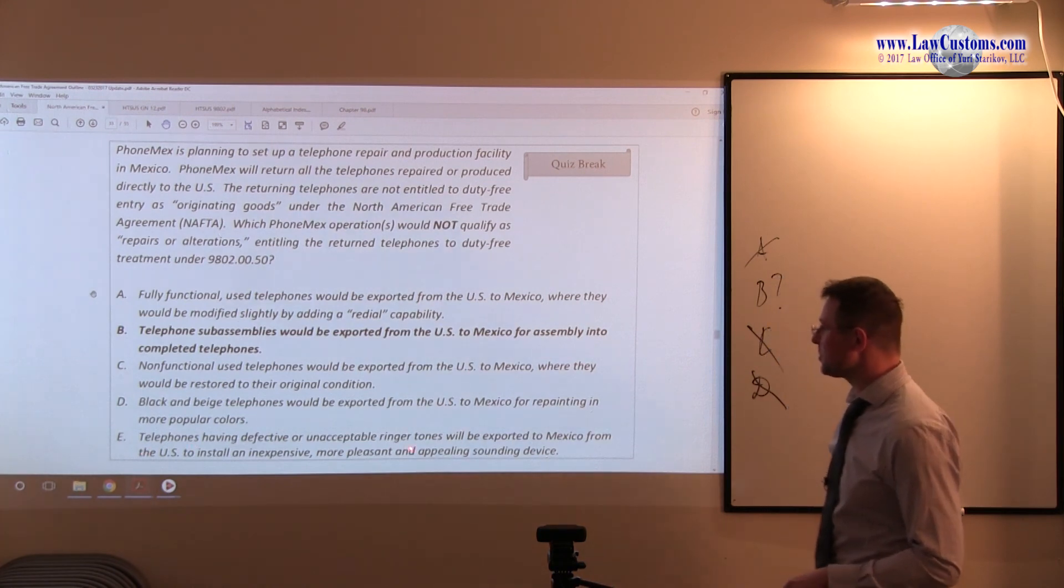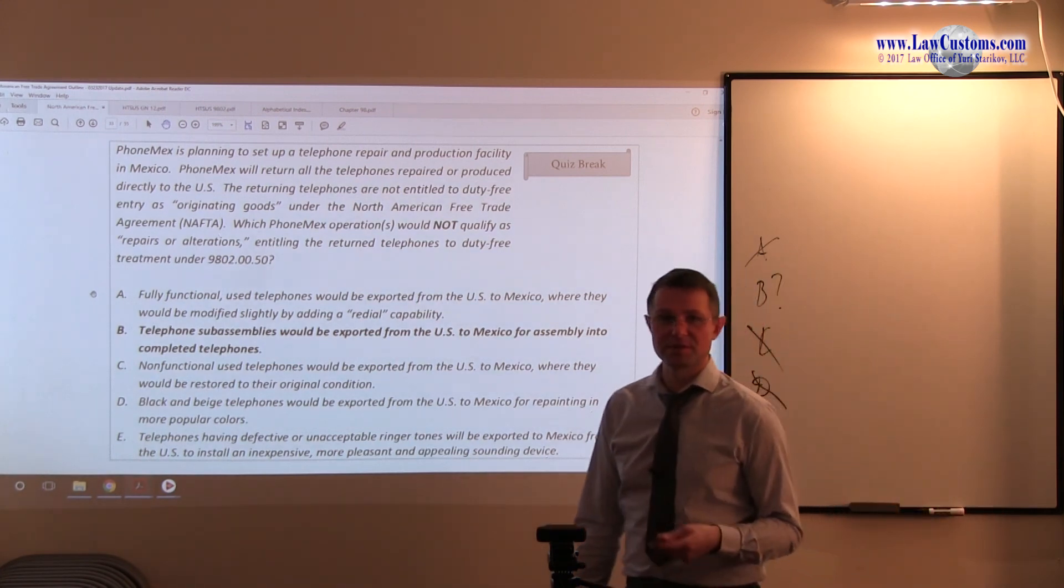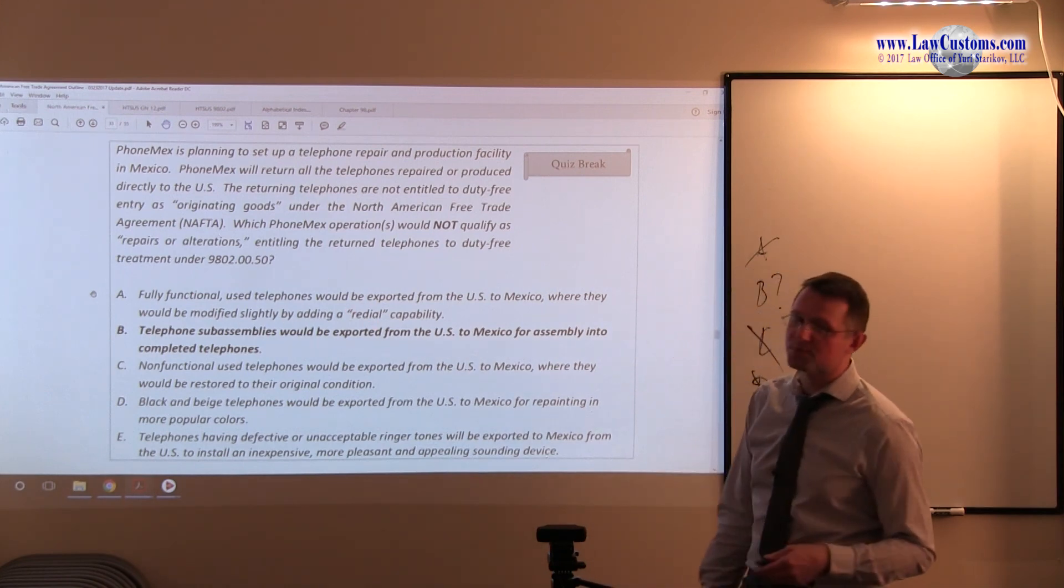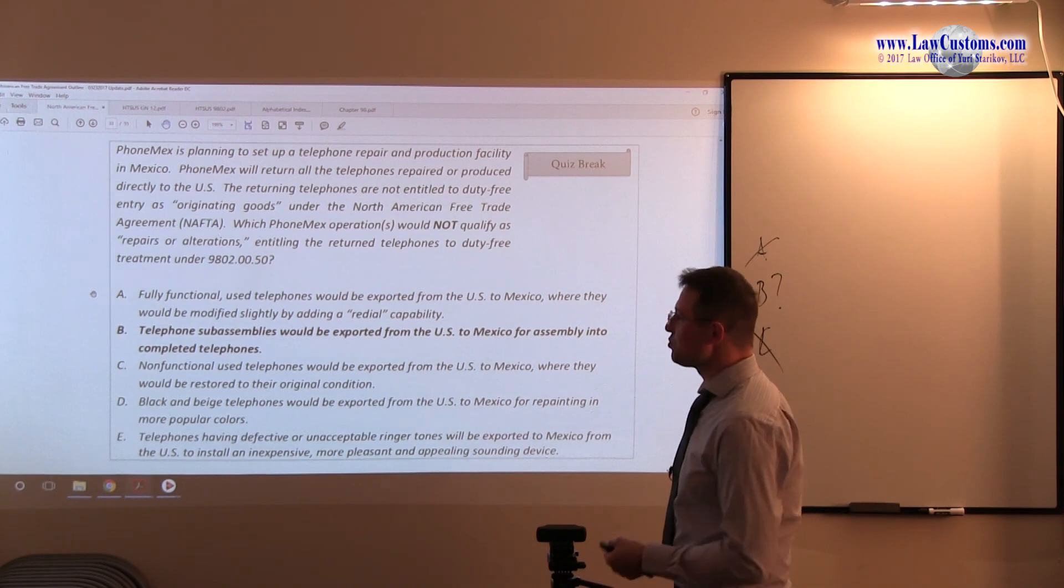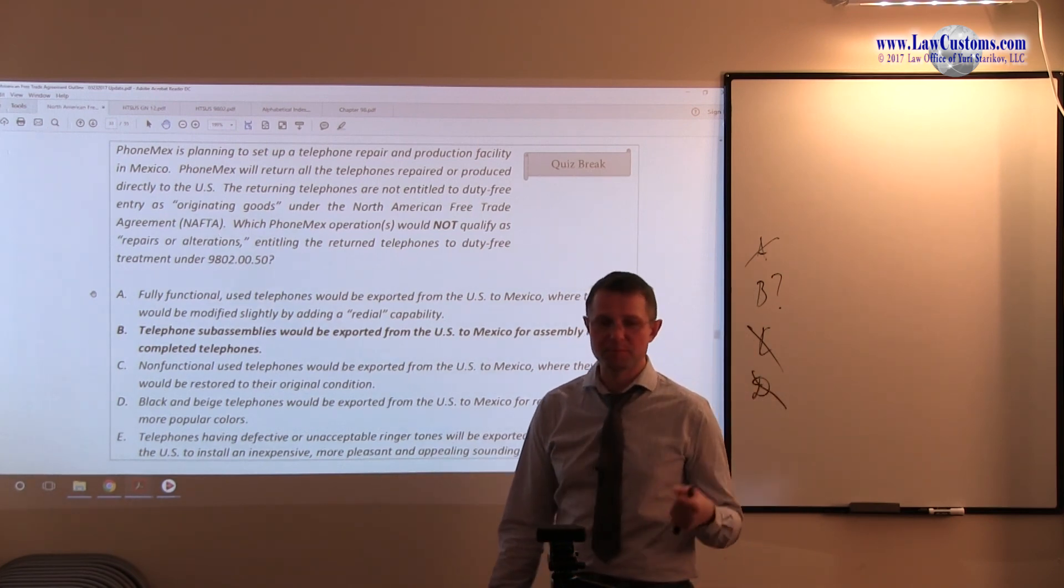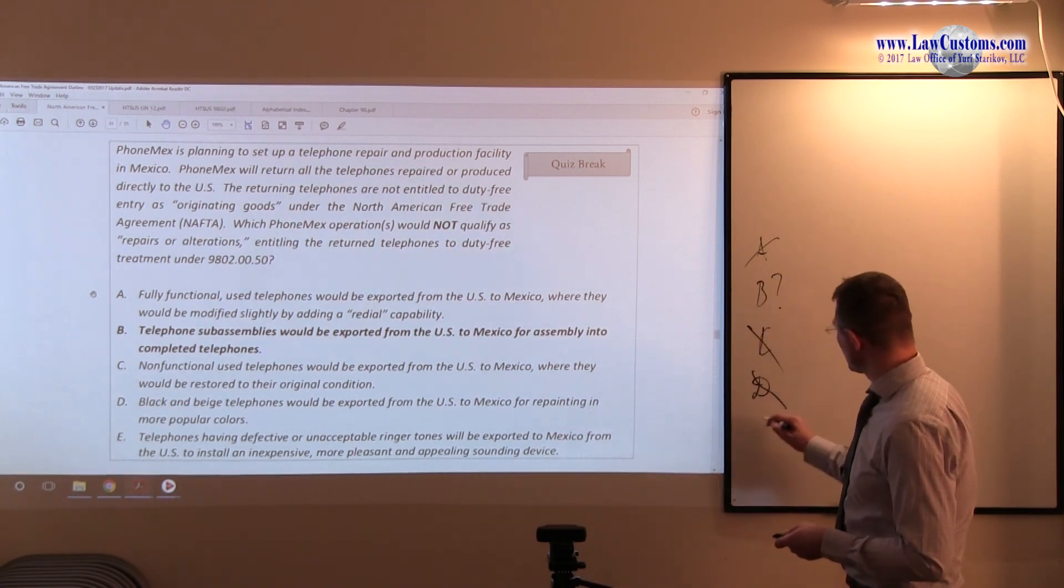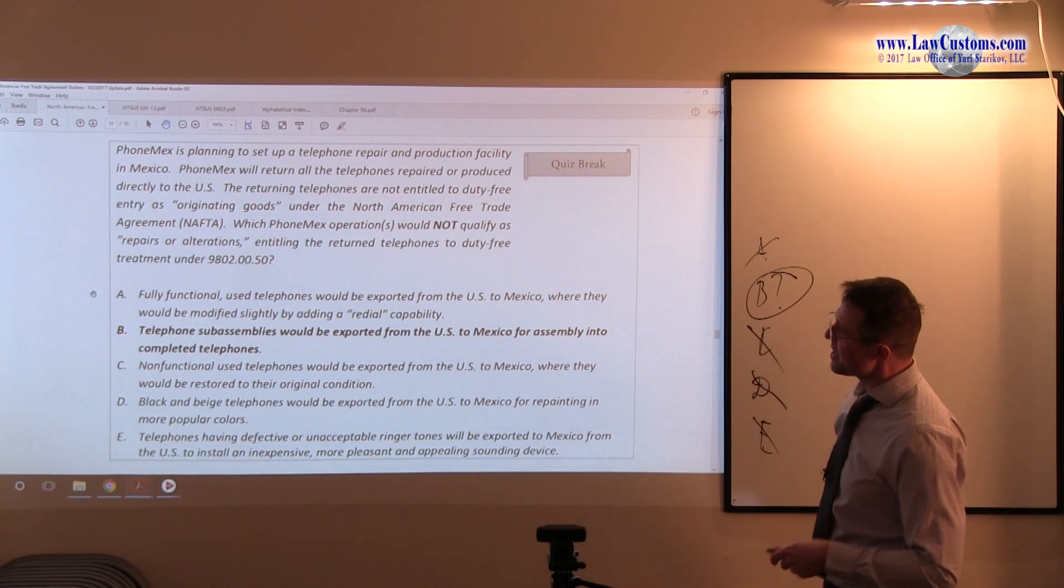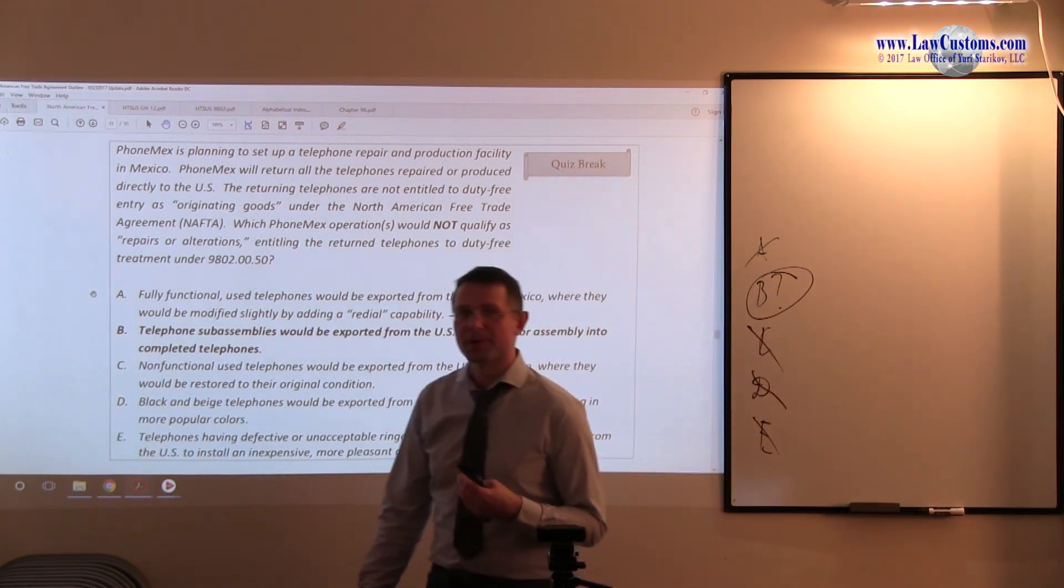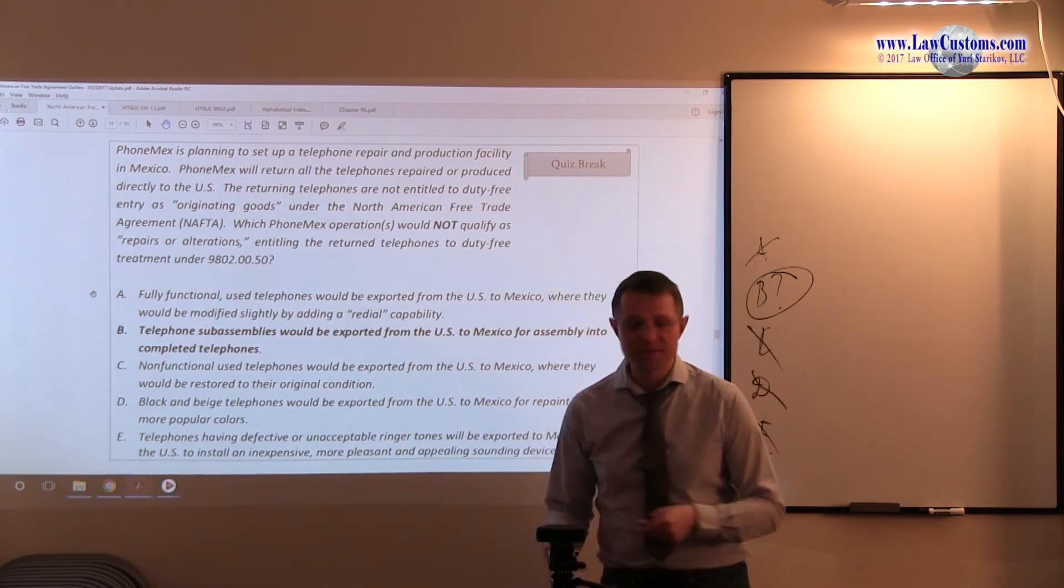And lastly, E. Telephones having defective or unacceptable ringer tones would be exported to Mexico from the United States to install inexpensive, more pleasant, and appealing sounding device. Alright, so, here all that has been changed is the sound, again, it's in line with slight modification provisions, it's not changing the essential character. The reason you buy a phone is to communicate, it's not to play music, even if it plays music, like many smartphones do currently, nowadays, still doesn't change the essential character. So, E is also not our choice. So, with this in mind, we can be more certain to pick B as the correct answer choice, by eliminating all the other ones that stand out on the side of repairs or alterations, as opposed to the side of changing essential character. So, for this one, B is the correct answer choice.